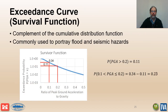An exceedance curve or survival function is the complement of the cumulative distribution function. The exceedance curve tells us the probability that the variable will be greater than a particular value. Flood hazard curves, seismic hazard curves, and the FN plot are some examples of exceedance curves. This is why we use the term exceedance in the phrase annual exceedance probability.